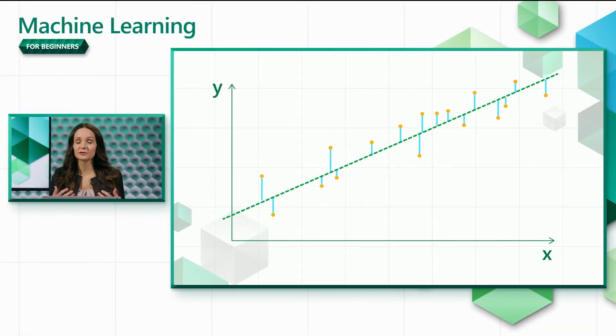It's impossible for a straight line to go through all the data points, but linear regression does the best job it can by finding the line that minimizes the error between the actual data points and the predicted line.